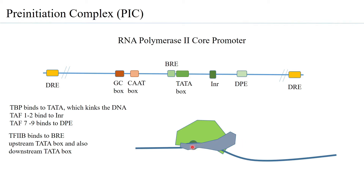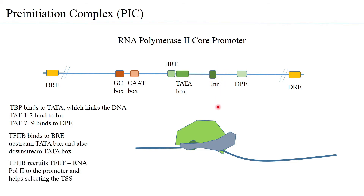More of the TF2B is aligned such that it is present towards the downstream of the INR or the transcription start site. This positioning is because TF2B is the one that is now going to recruit TF2F and the RNA polymerase complex.